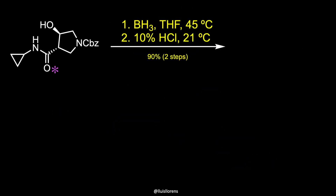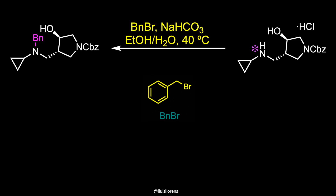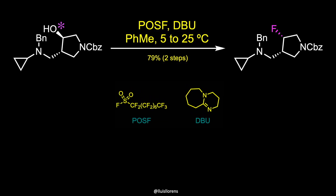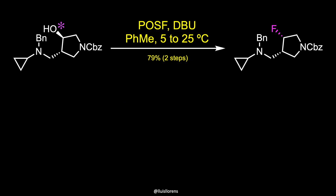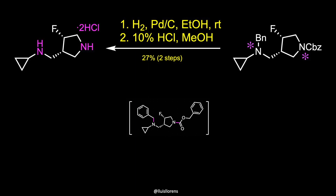The amide was then reduced to the corresponding amine with borane in THF, and it was isolated as its hydrochloride salt. Subsequent benzyl protection gave a trialkylamine that was treated with perfluorooctanesulfonyl fluoride in the presence of DBU to deliver a chiral fluoride with inversion of stereochemistry. Finally, removal of the protecting groups and salt formation produced the fluoropyrrolidine fragment as a crystalline solid.